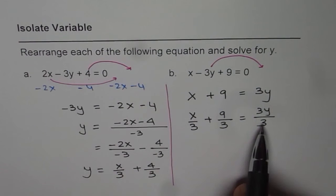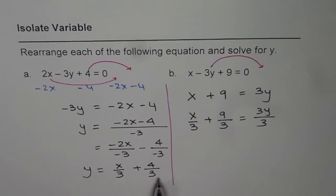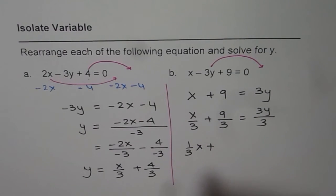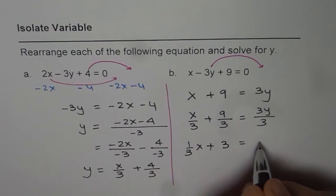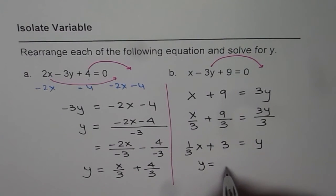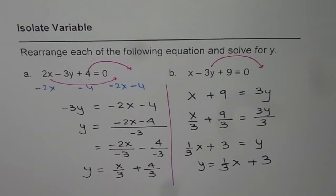So we have divided every term by 3. So what do we get? We get 1 third of x plus 9 divided by 3 is 3 equals to y. Do you see that? So we can write down that y equals to 1 third of x plus 3. So that's an alternate way of solving this.